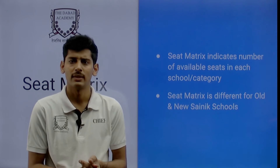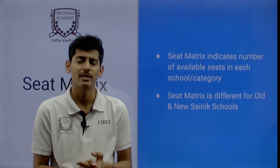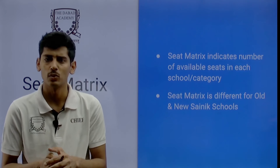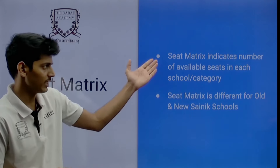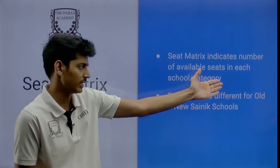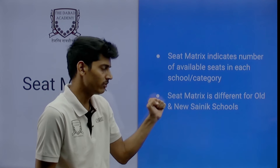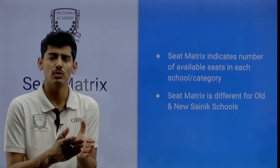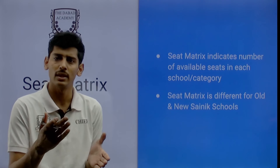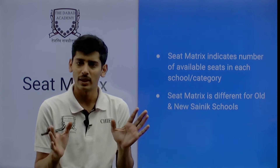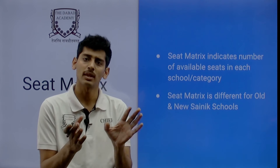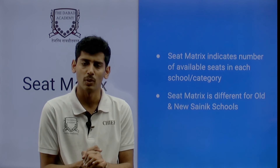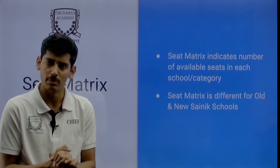What is the meaning of seat matrix? For Round 3, seat matrix basically means how many seats are still pending depending on your category and which particular school you want to choose. The definition is: number of available seats in each school per category. One important thing - seat matrix is different for old Sainik schools and new Sainik schools. For new Sainik schools, more than 75% of the seats are still pending. But for old Sainik schools, almost 70 to 80% of seats are already fulfilled.